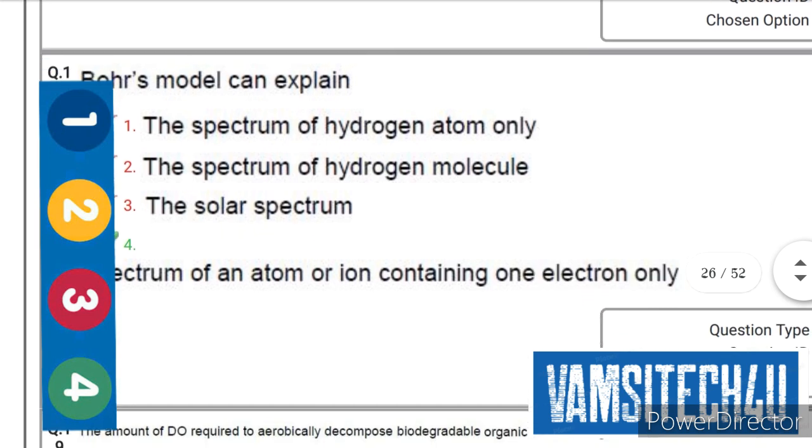Bohr's model can explain... the right option is fourth one, that is spectrum of an atom or ion containing one electron only.